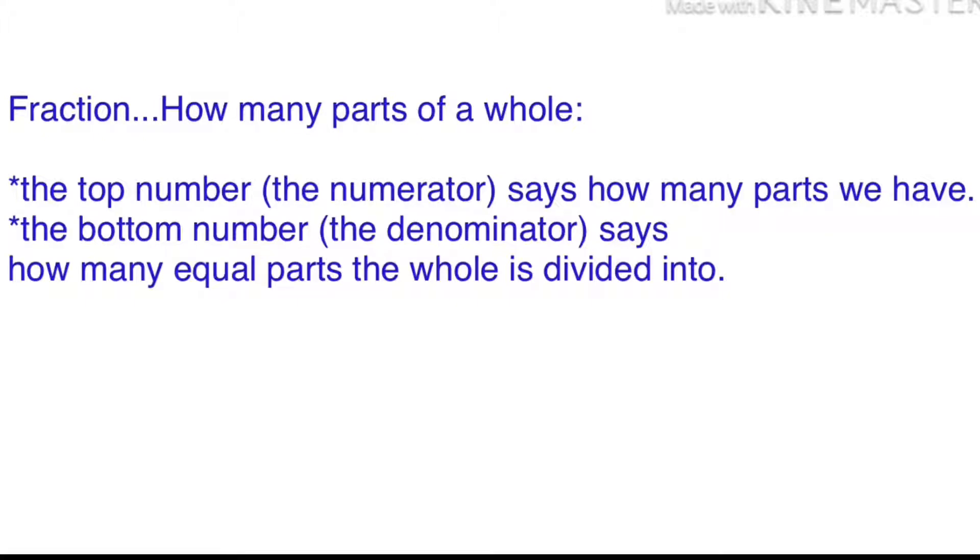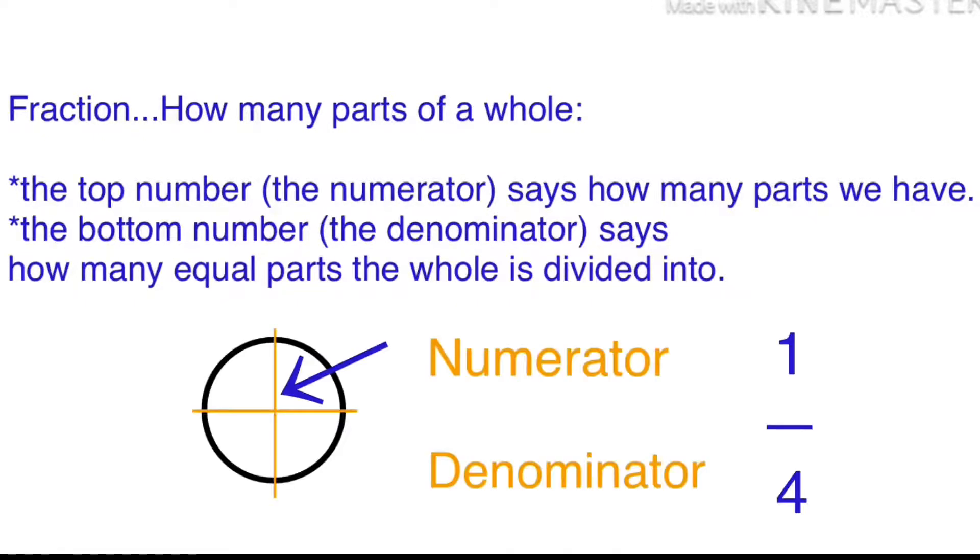We will be looking at fractions. Fractions are how many parts of a whole. The top number, the numerator, says how many parts we have. The bottom number, the denominator, says how many equal parts the whole is divided into. If you take one piece, it would be one quarter. But if you take four pieces, it would be one whole, which is also known as four quarters.